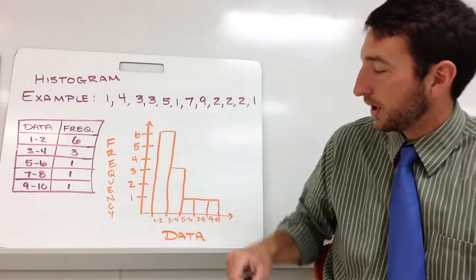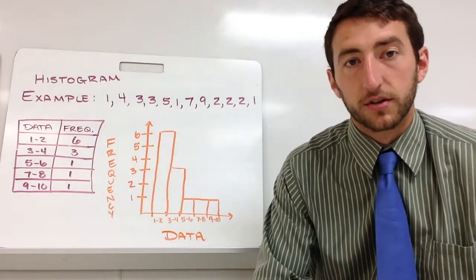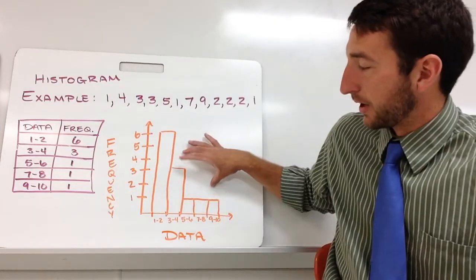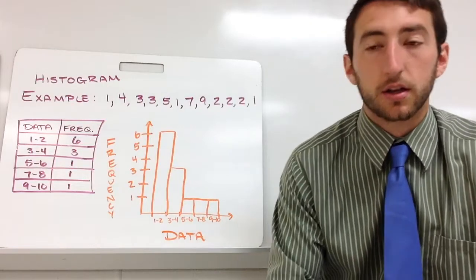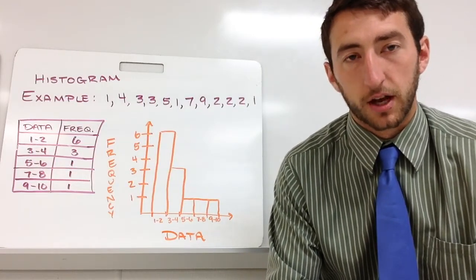So I know that between one and two goes up to six. And then we get our general shape from this as well. This gives us a lot better idea of what's going on quickly. And that's why we display our data in these different types of graphs.